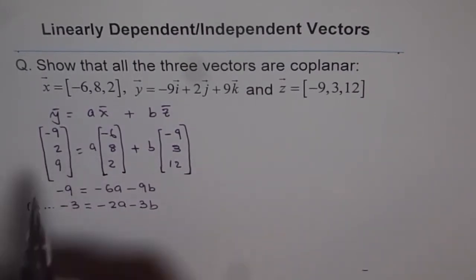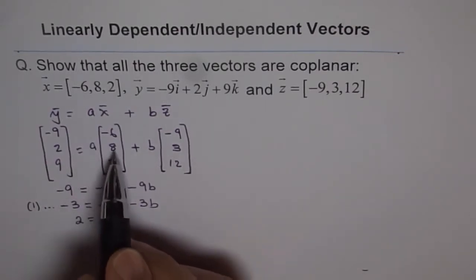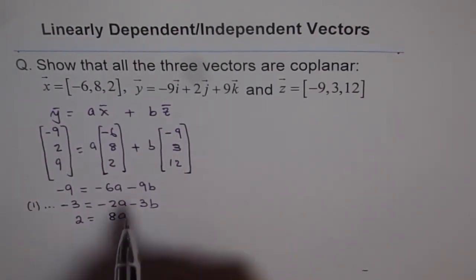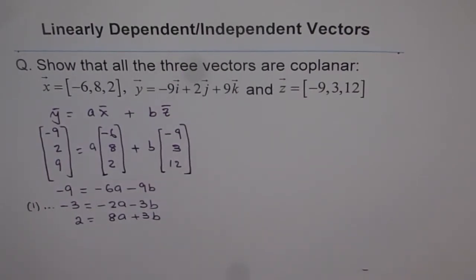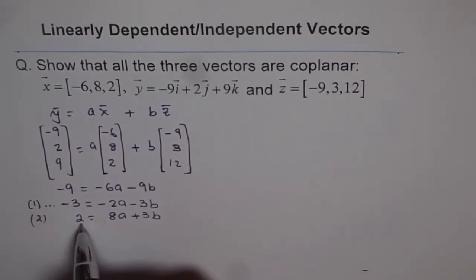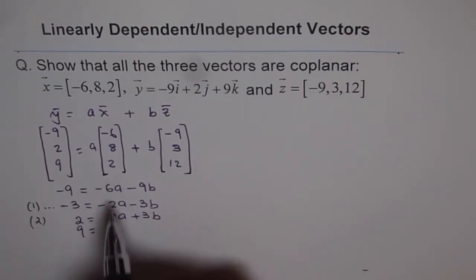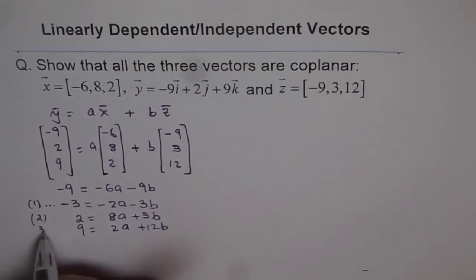Now, the second equation could be 2 equals to 8 times a, which is 8a, plus 3b. So we'll call this equation 2. And now let's write down the third equation, which is 9 is equal to 2a plus 12b. We'll call this as equation 3.